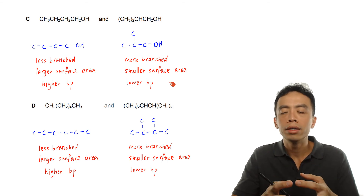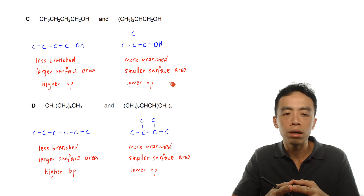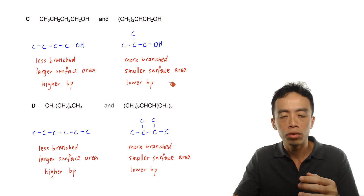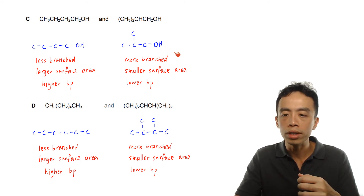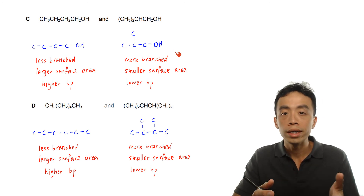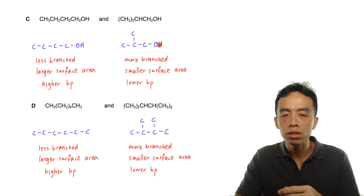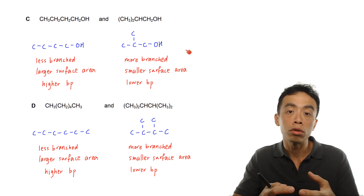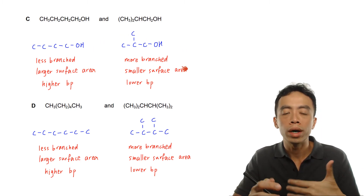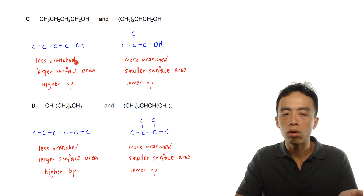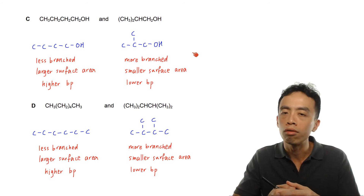This idea about surface area doesn't directly apply to hydrogen bonding itself, but since the extent of branching is the only difference between the two alcohols, we focus on that to explain the difference in boiling point. The more branched 2-methylpropan-1-ol is more spherical with a smaller surface area, weaker intermolecular interactions, and a lower boiling point.